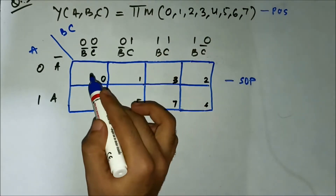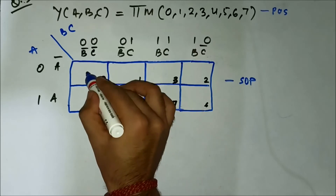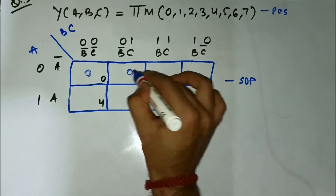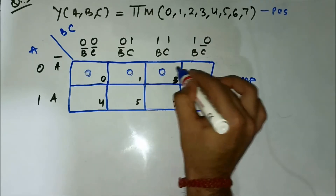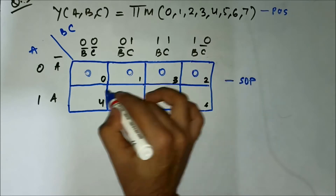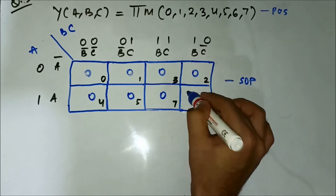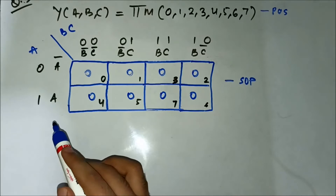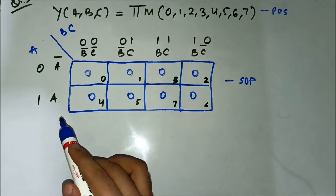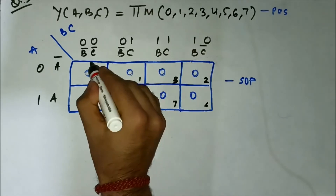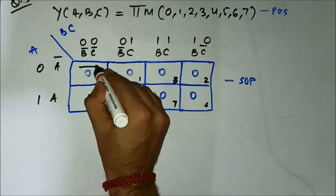So we'll mark all the cells of this KMAP because everything is there. Here we can group them as one octet — this whole thing.